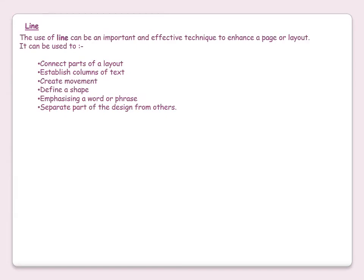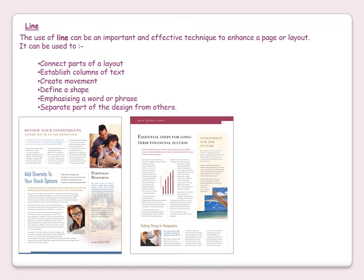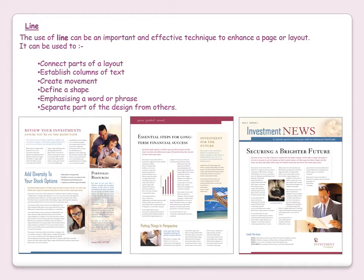The use of line can be an important and effective technique to enhance a page or layout. It can be used to connect parts of a layout, establish columns of text, create movement, define a shape, emphasise a word or phrase, or separate parts of a design from others. In the three examples shown, different lines are used to help improve the layout — lines which separate items, lines between two columns of text, lines underneath text to emphasise it, and lines used as a box around a shape to define it. Lines are very important at improving a layout.